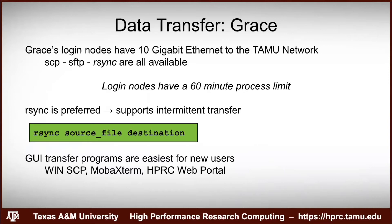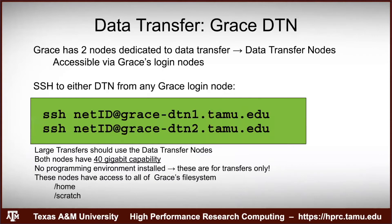Takeaways: Grace's login nodes have a fast connection. If using the command line, use rsync because it supports intermittent transfer — if the transfer dies, rsync can resume later. Login nodes have a 60-minute process limit, so for large data transfers you'll need an alternate method. GUI transfer programs are very easy.